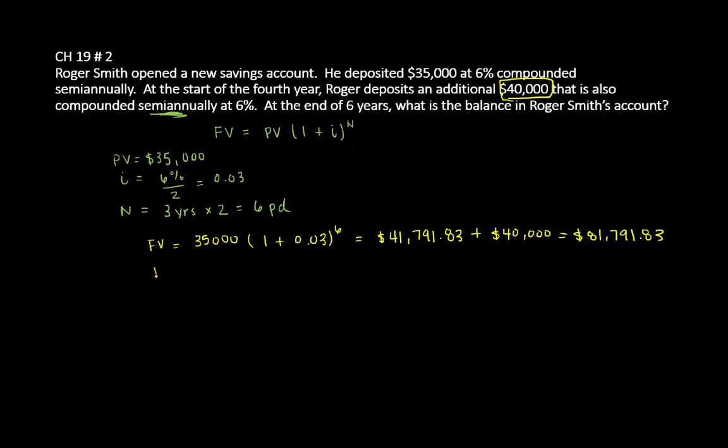So we're going to plug this back into the formula. For the last three years, future value equals $81,791.83 times (1 + 0.03)^6.